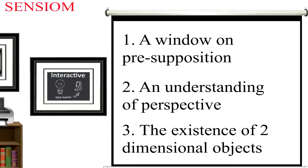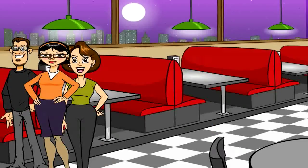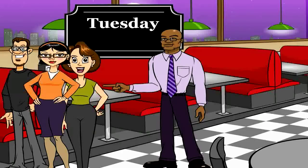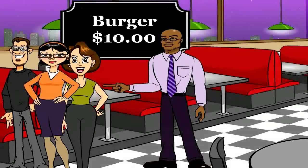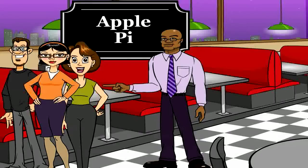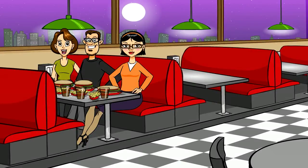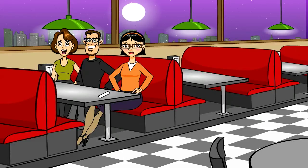Step one: a window on presupposition. Three people walk into a restaurant. The waiter tells them it's Tuesday and today's special is a burger. It comes with fries and a drink for ten dollars and a piece of apple pie for dessert. He seats them all at the same table. After a few moments, all three of them choose the Tuesday special.